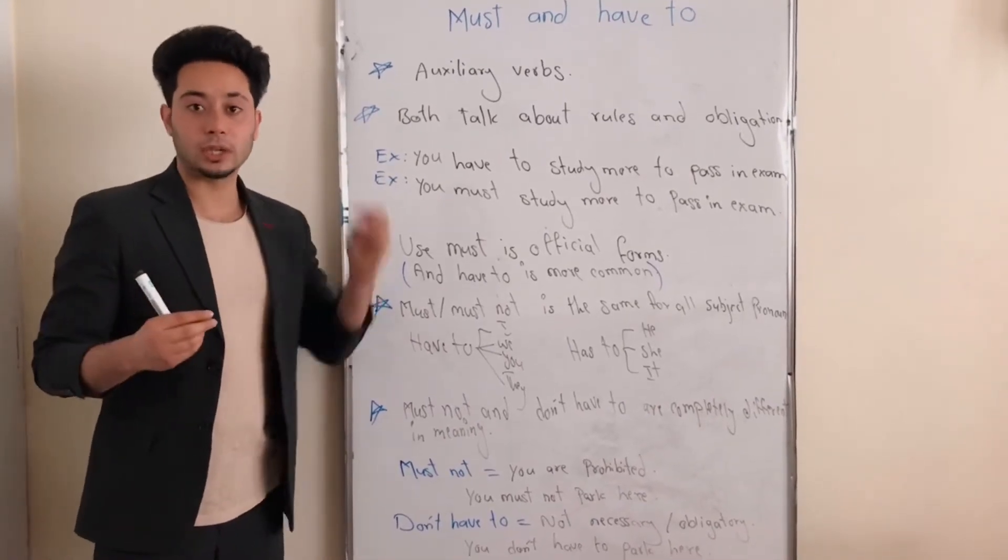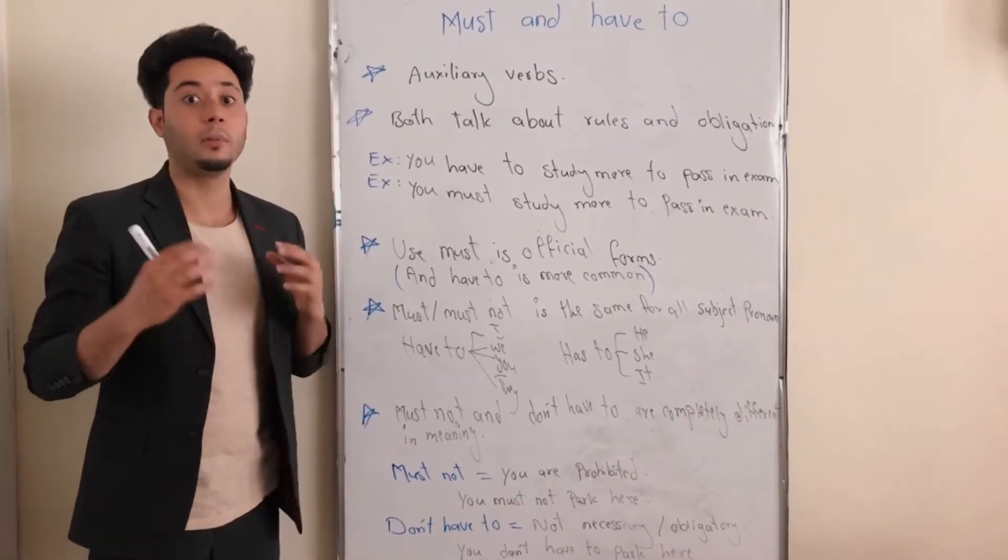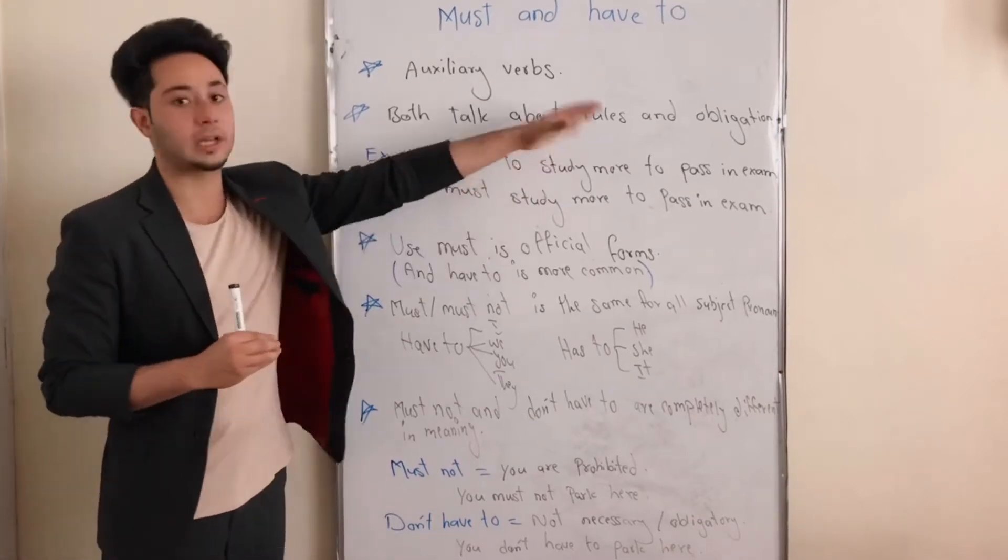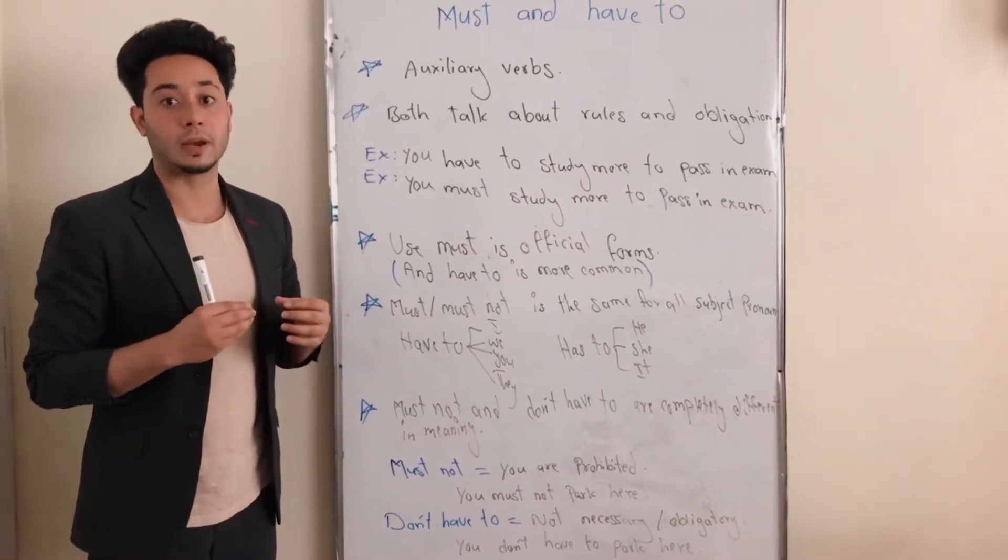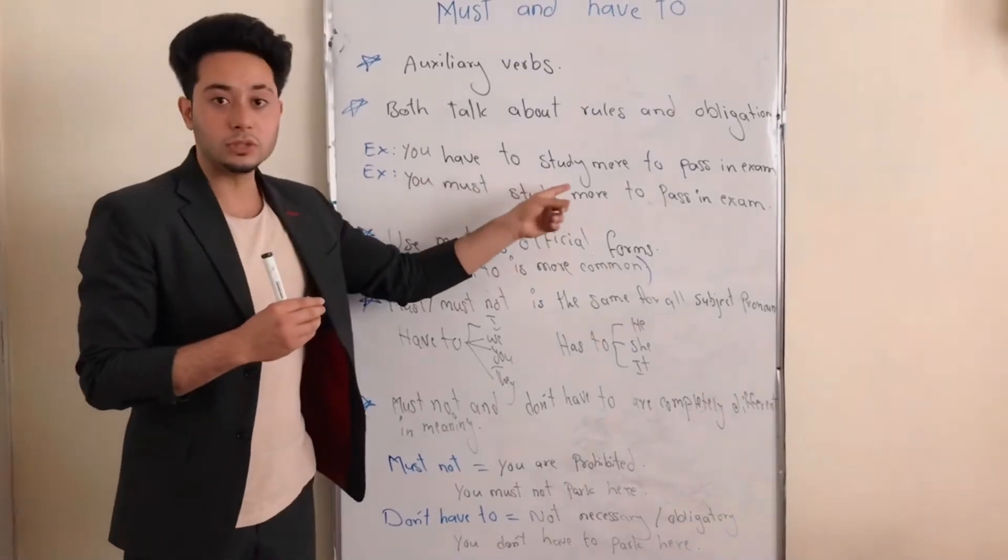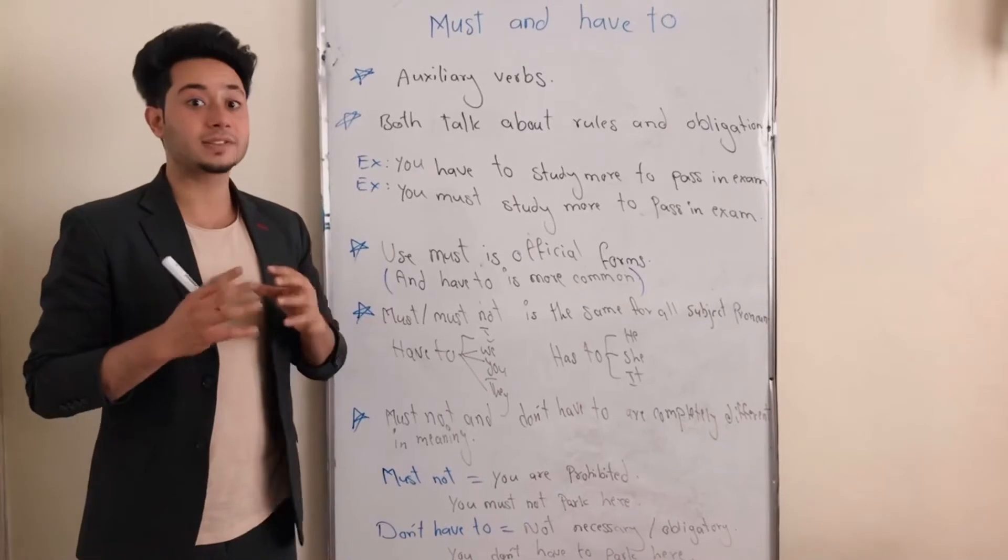As I mentioned, they both are auxiliary verbs and they both are similar in one part. In affirmative forms, we use both of them to talk about rules and obligations. For example, you have to study more to pass an exam, and you must study more to pass an exam. But there is something that I want to mention.